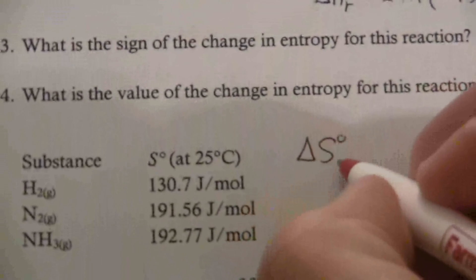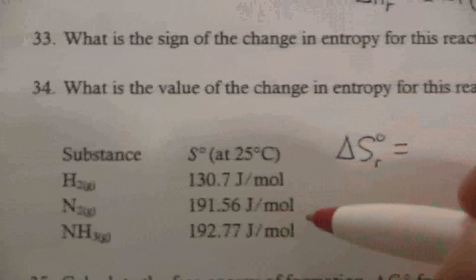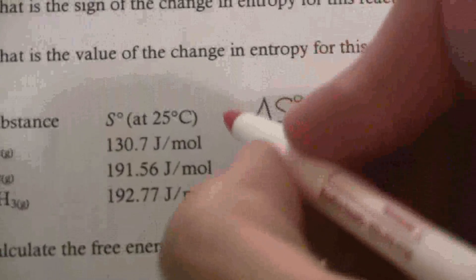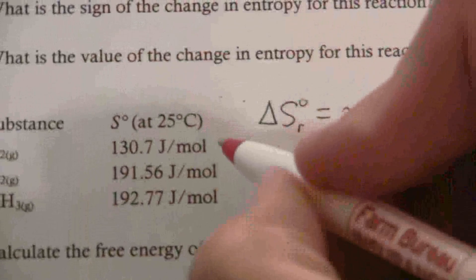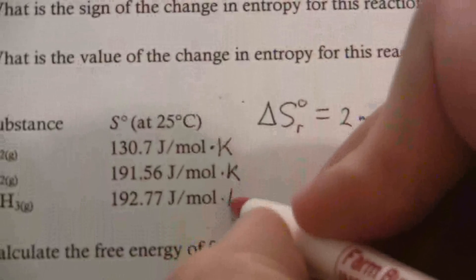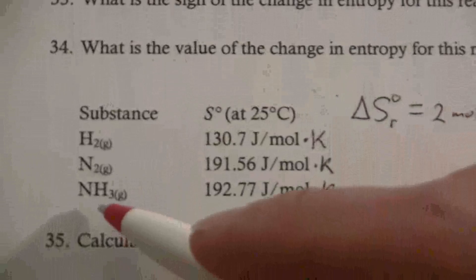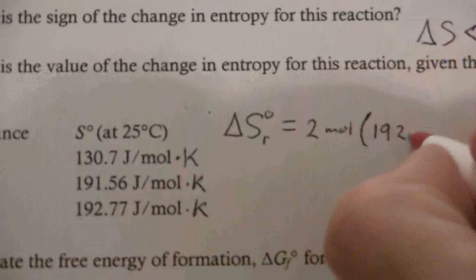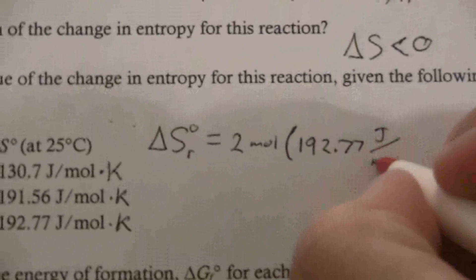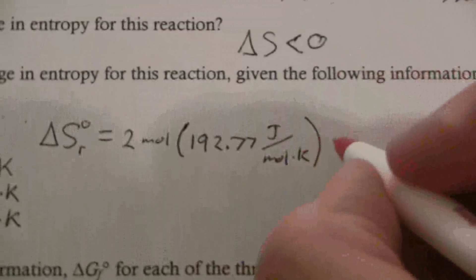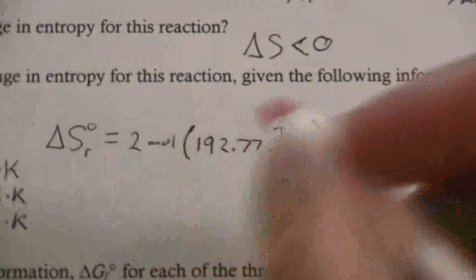So the delta S for this reaction is the sum of the products, which is two ammonia molecules. So we'll have two moles, and by the way, I used the wrong units here. This is joules per mole Kelvin. So here I have two moles of ammonia, and its entropy is 192.77 joules per mole Kelvin.